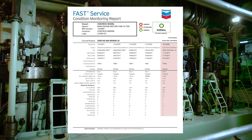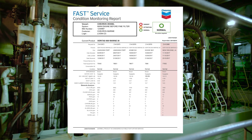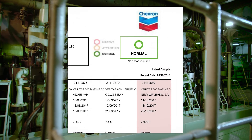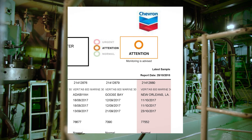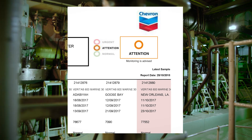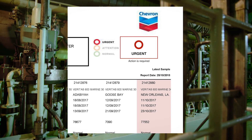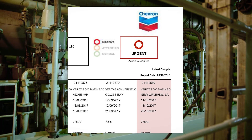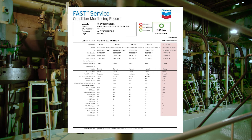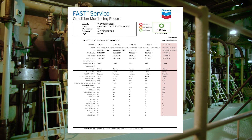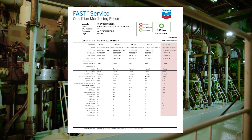The traffic light icon located at the top of the FAST report immediately indicates the status of the sample. Green — Normal: there is no action required. Orange — Attention: the oil is still suitable for use, but monitoring is advised. Red — Urgent: an immediate and corrective action is required. Before taking any action, it's advisable to cross-check against specific OEM recommendations, historical trends, and your own insights and experience.